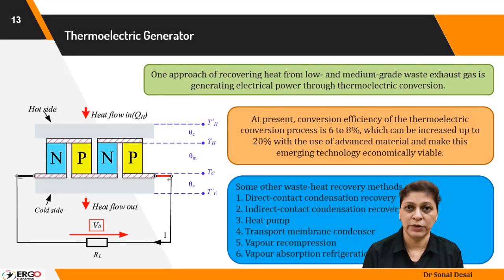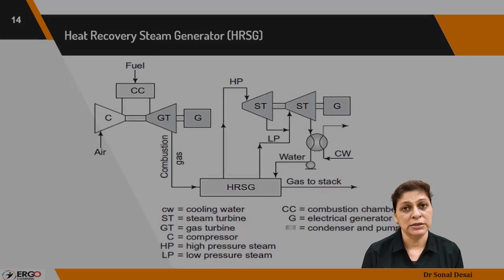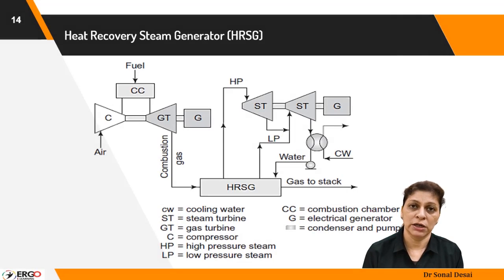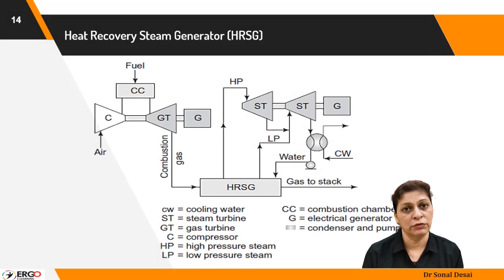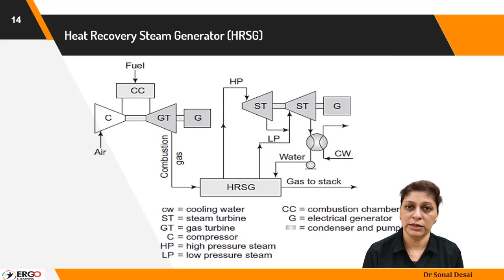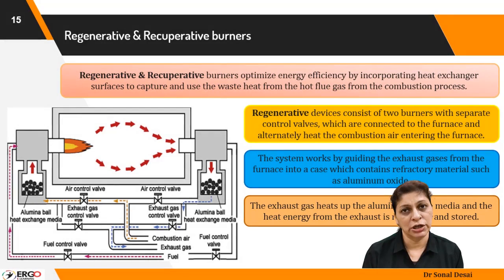The use of heat pipe heat exchangers, waste heat recovery boilers, and thermoelectric heat generation is explained with necessary diagrams. Many chemical industries use heat recovery steam generators, so when heat recovery steam generators are to be used and how they work is explained. Recuperative and regenerative burners that utilize waste heat are also shown.